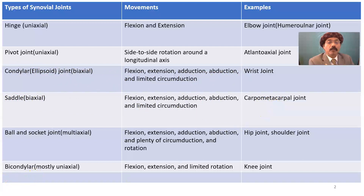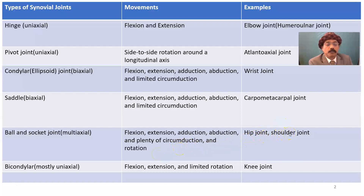Ball and socket joint has multi-axial movement: flexion, extension, adduction, abduction, plenty of circumduction, and rotation. Examples are the hip joint and the shoulder joint.